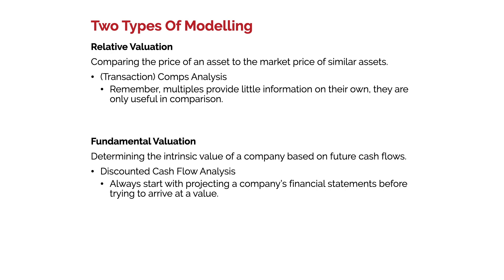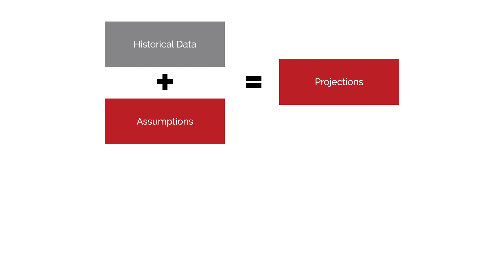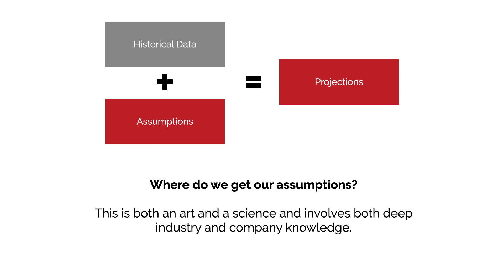DCF is a type of fundamental valuation where we want to determine the intrinsic value of a company based on its future cash flows. The discounted cash flow analysis always starts with projecting a company's financial statements, then using that to figure out a value. We need to take historical data and assumptions to project future revenues and cash flows, so we have to make a lot more assumptions than in relative valuation. The question is where do we get these assumptions — how can you tell how much Apple will sell in iPhones, Macs, and iPads next year? It's an art and a science.